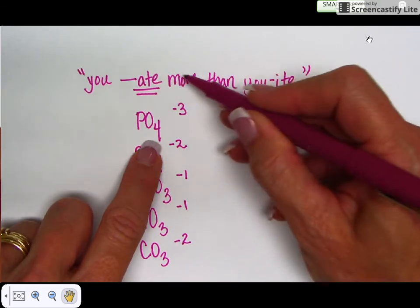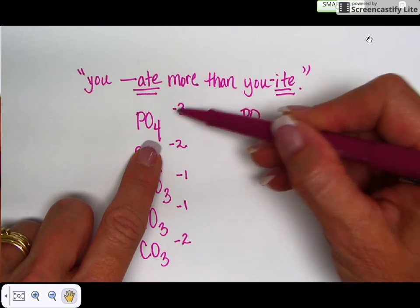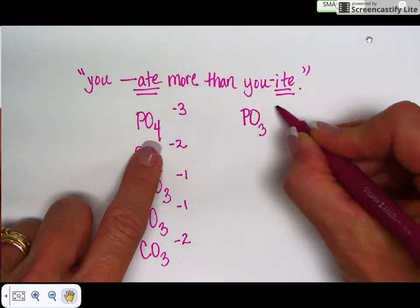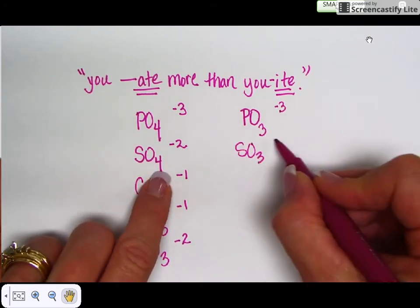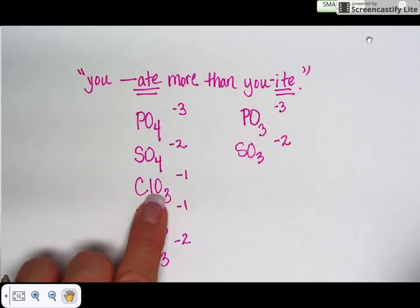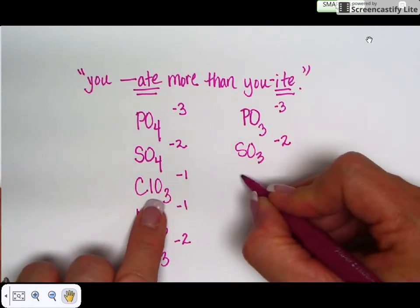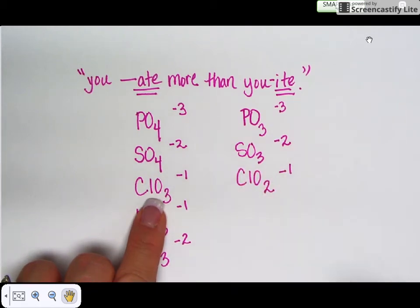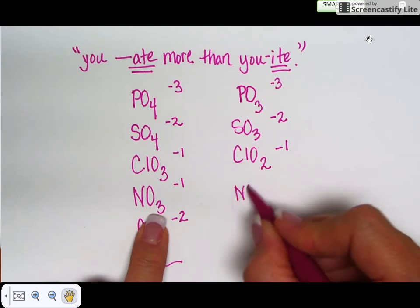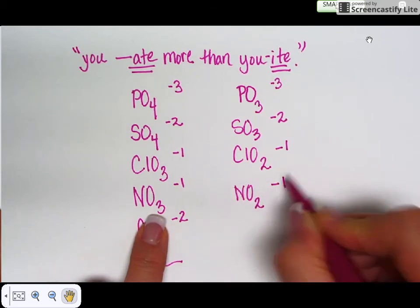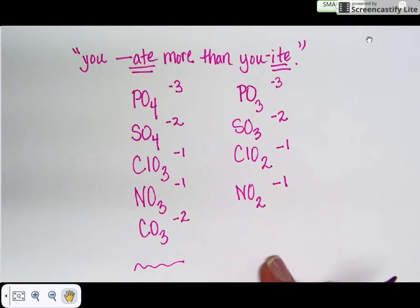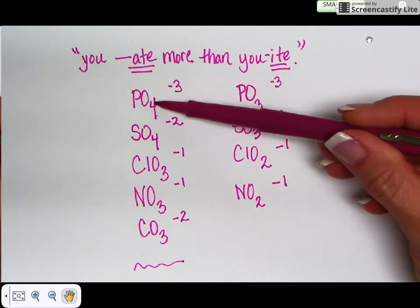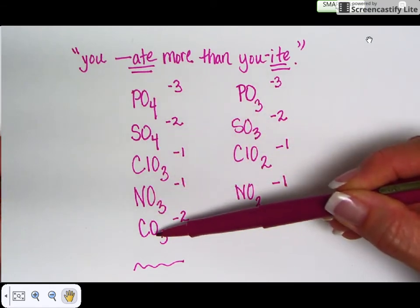For example, if you memorize phosphate, then you automatically know phosphite is going to be exactly the same but it's going to have one fewer oxygen. So 'you ate more than you -ite' means the -ate one has one more oxygen. So this is going to be PO3, same charge negative three. Sulfite SO3 negative two. These are just patterns, y'all. Chlorite is ClO2, same charge negative one. Nitrite NO2 negative one, one less oxygen, one less oxygen. Carbonate does not have a carbonite ion, so we're not going to do a twin for this one or cousin for this one.